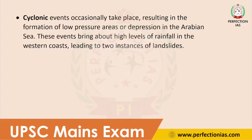The last cause specific to the Western Ghats is cyclones. Cyclone events occasionally occur, resulting in the formation of low-pressure areas or depressions in the Arabian Sea. Due to the impact of climate change, the frequency of cyclones in the Arabian Sea has increased. These events bring high levels of rainfall to the Western Ghats, leading to incidents of landslide. So, cyclones are also one of the major reasons for landslides in the Western Ghats.